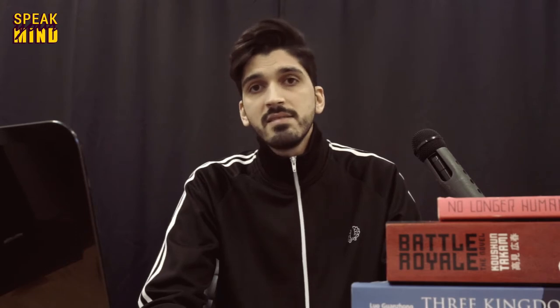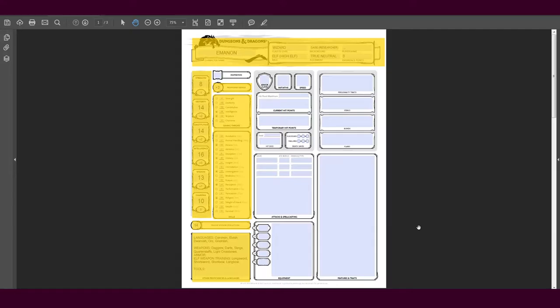He does not get any other proficiencies from his background. But from his class, the only additional proficiencies he gets are in certain weapons: daggers, darts, slings, quarterstaffs, and light crossbows. And that's about it.